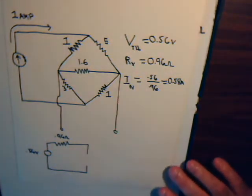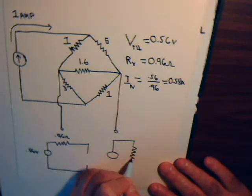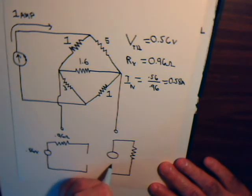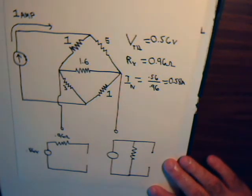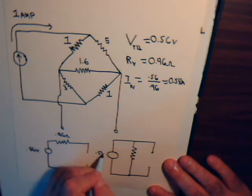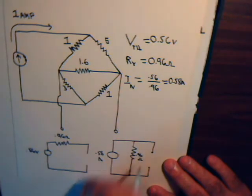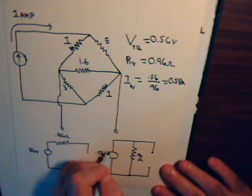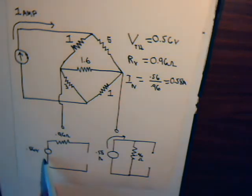The Norton equivalent circuit is a current source with our equivalent resistance in parallel with it, and then we have our terminals. The current source is 0.58 amps, and the parallel resistance is 0.96 ohms. So for this bridge circuit, the Thevenin equivalent circuit is a 0.56V source in series with 0.96Ω, and the Norton equivalent circuit is a 0.58A current source in parallel with 0.96Ω.